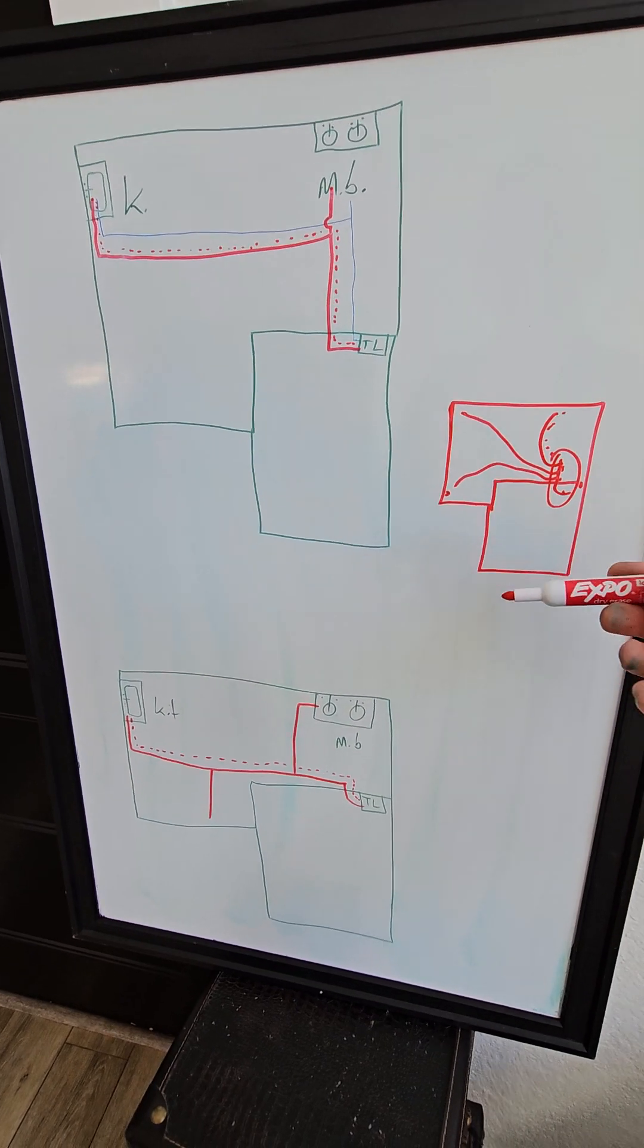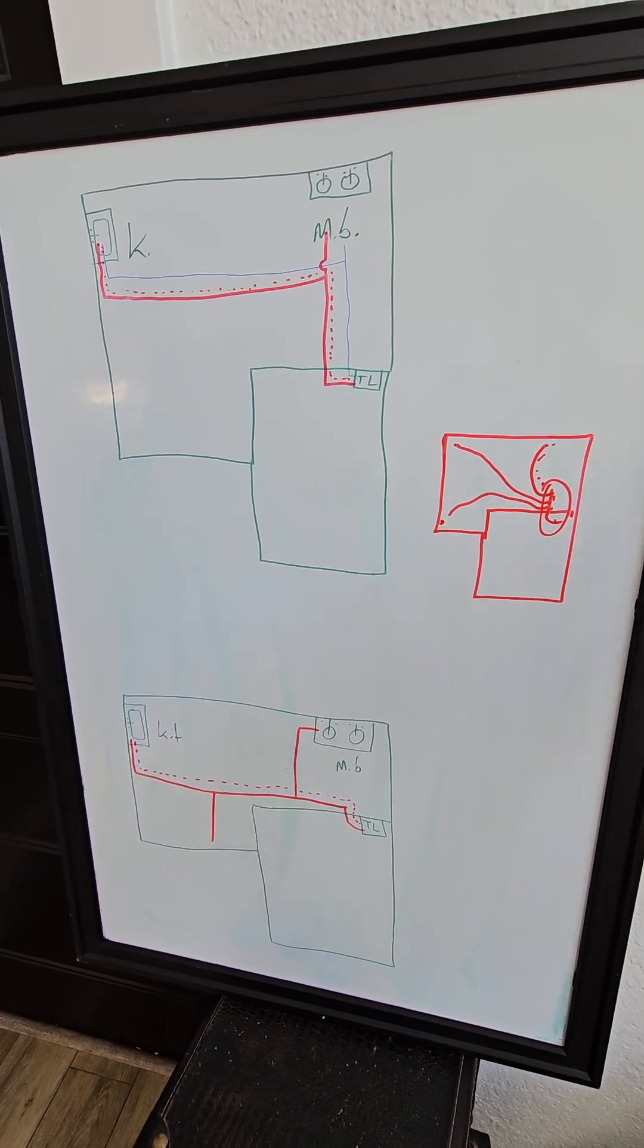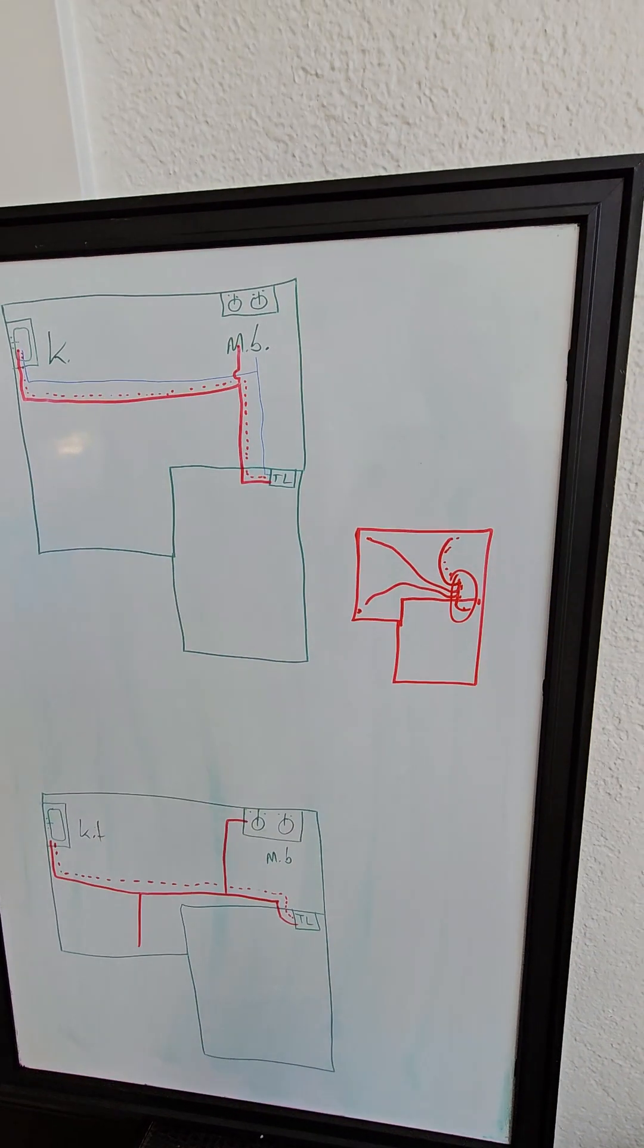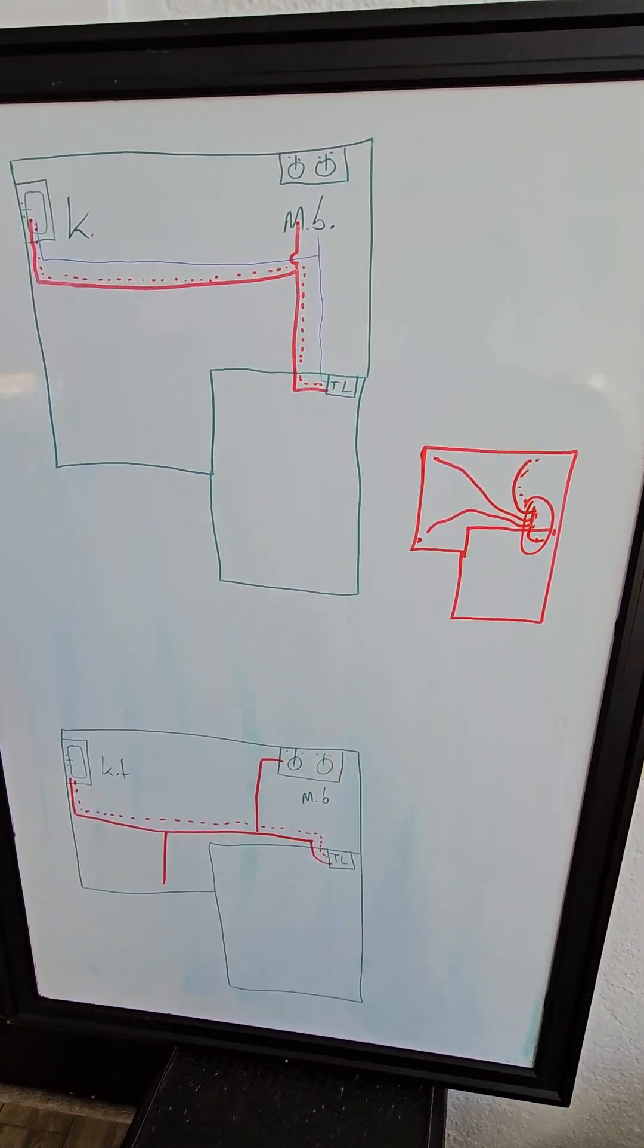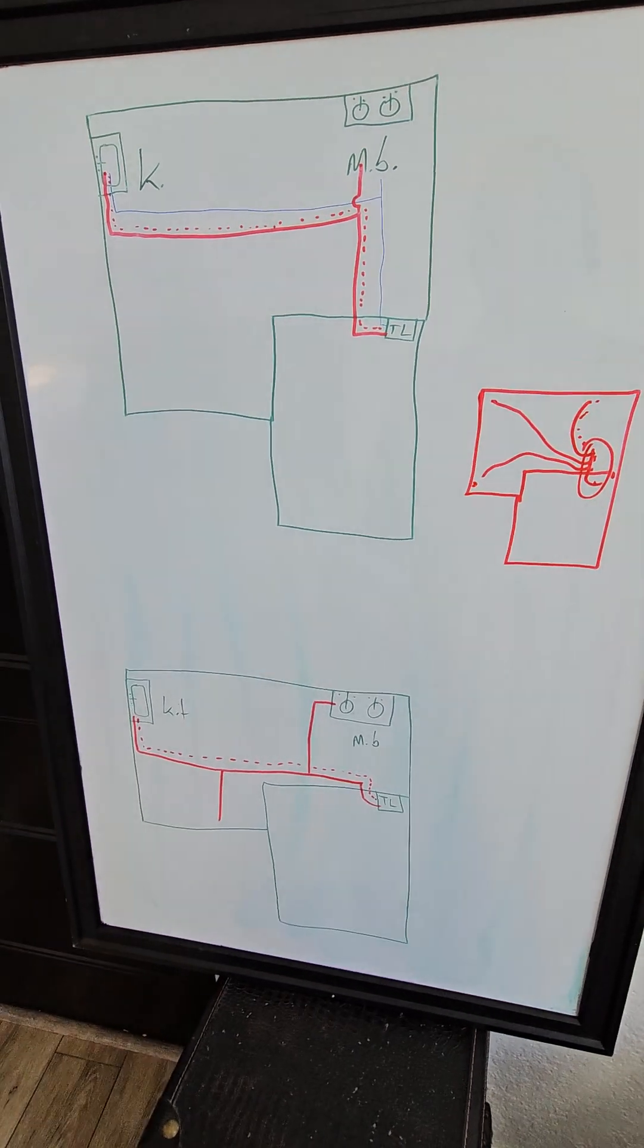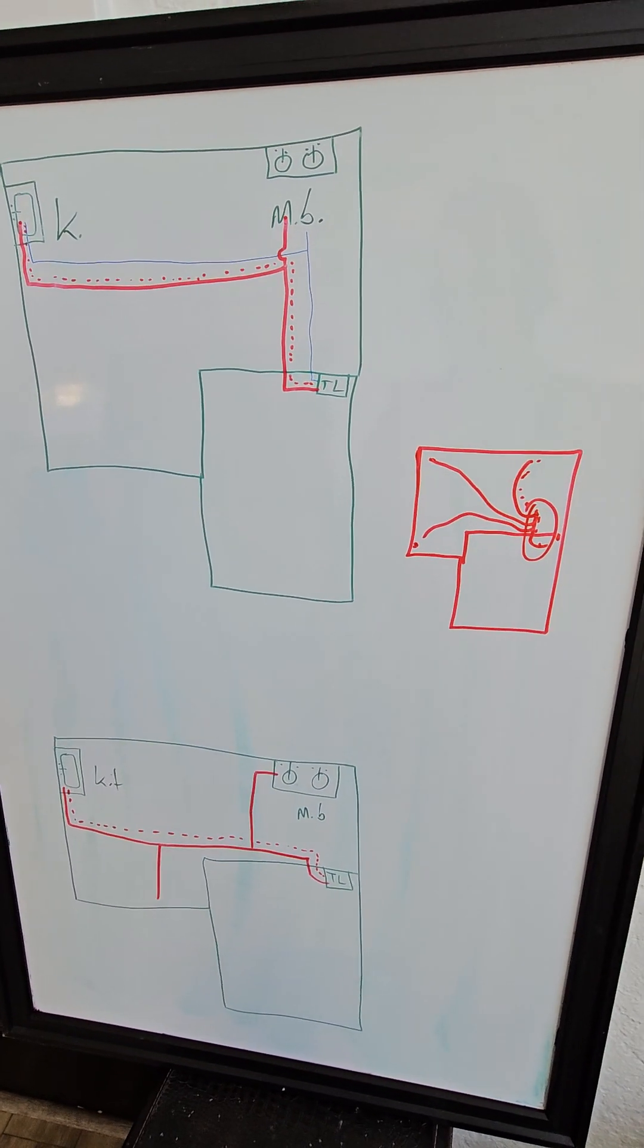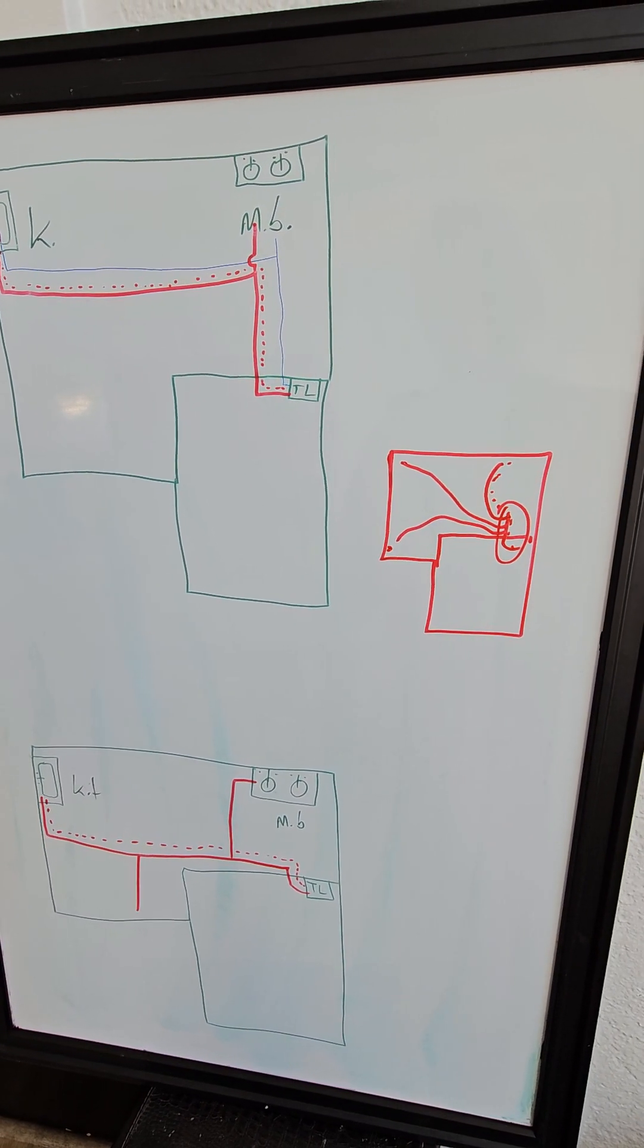And sometimes you can see it from the crawl space or the attic, but if these lines are ran up and down walls or in between the two floors, then it's probably hard to figure that out. Anyway, I'm more than happy to take any questions and help you get this figured out even further.